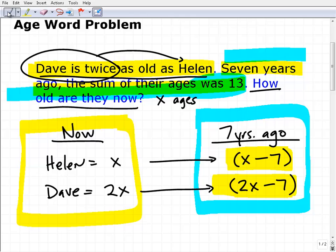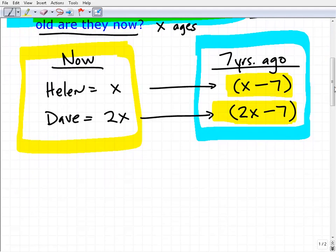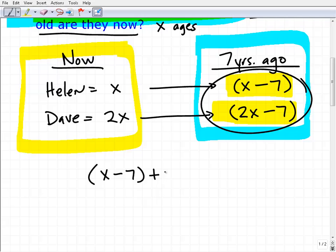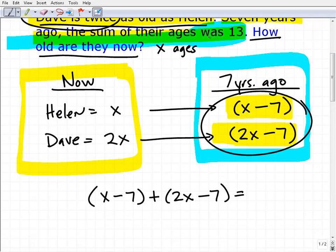That's the part of the problem that allows you to set up an equation. So the sum of their ages, I'm just going to take their ages and add them up. It would be X minus seven plus two X minus seven. This is Helen and Dave's age seven years ago, respectively. The sum equals 13.